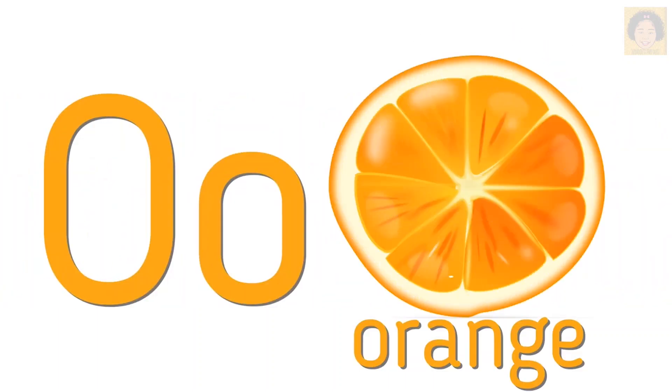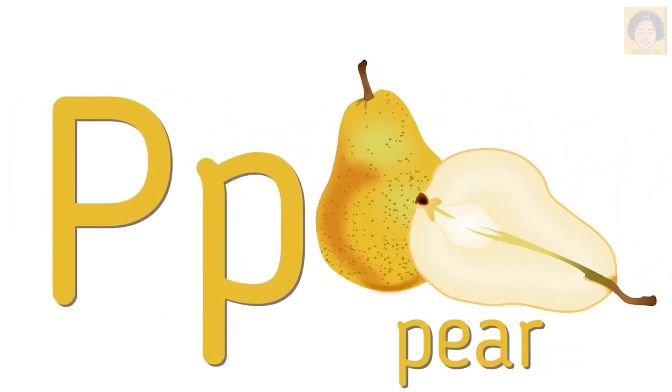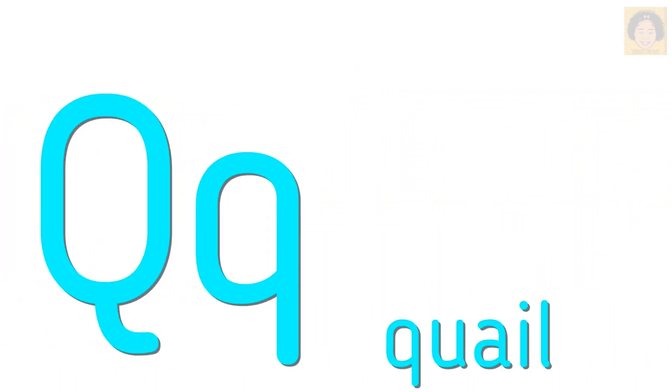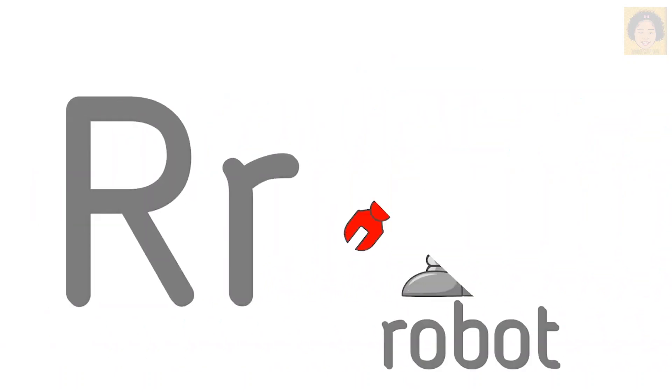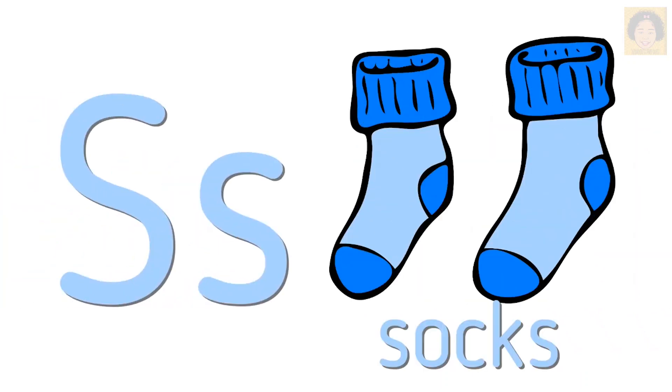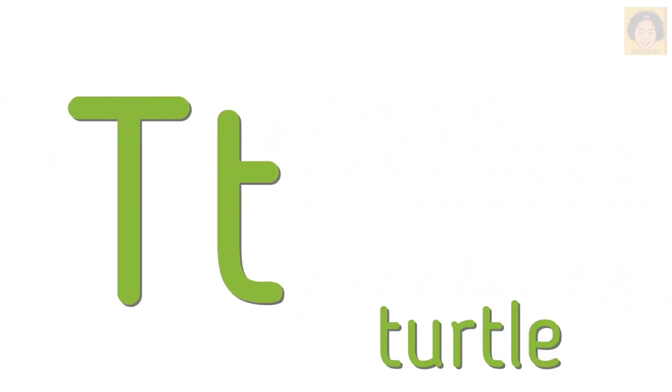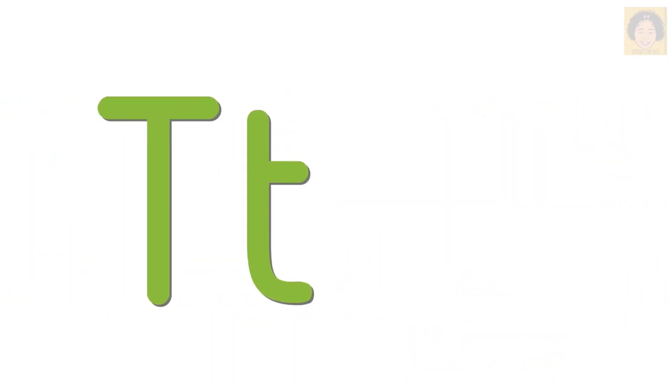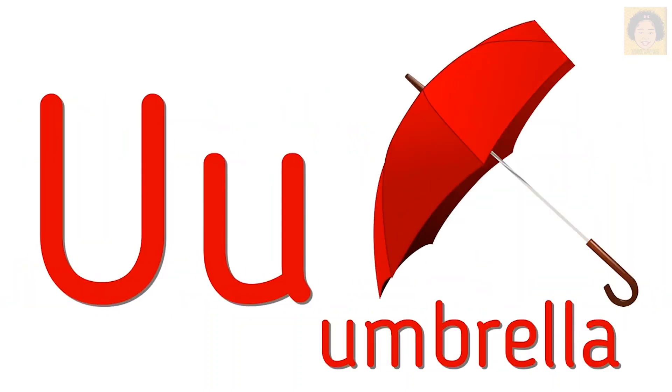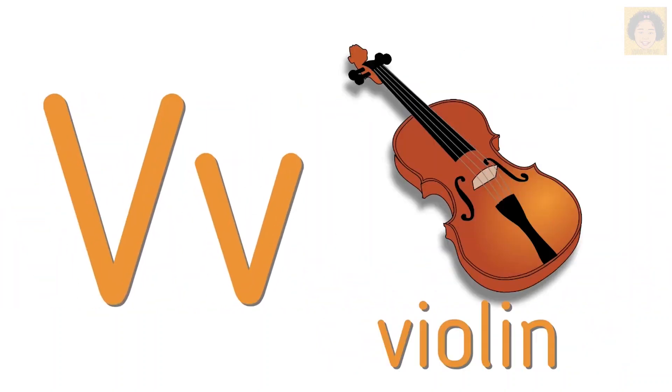O is for orange. P is for pear. Q is for quail. R is for robot. S is for socks. T is for turtle. U is for umbrella. V is for viola.